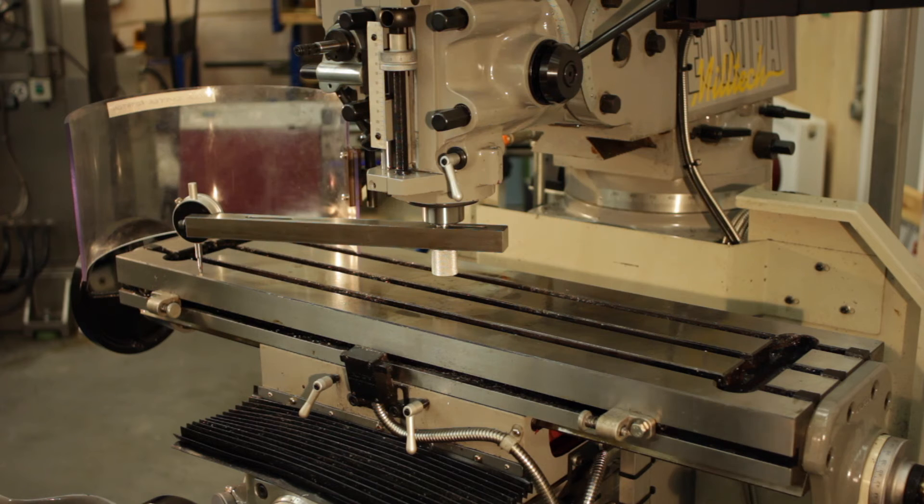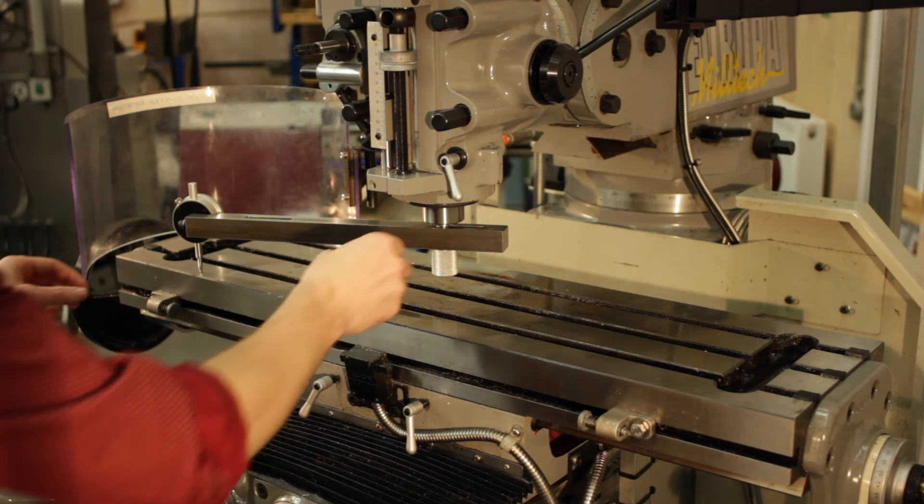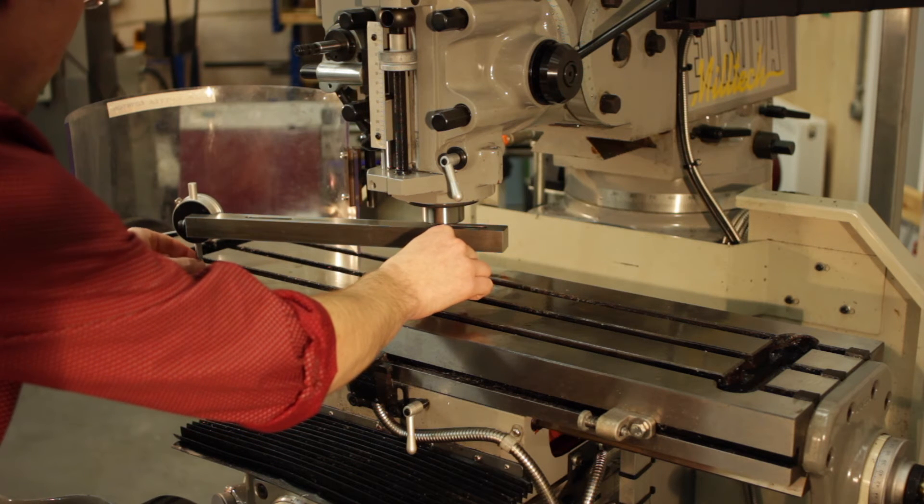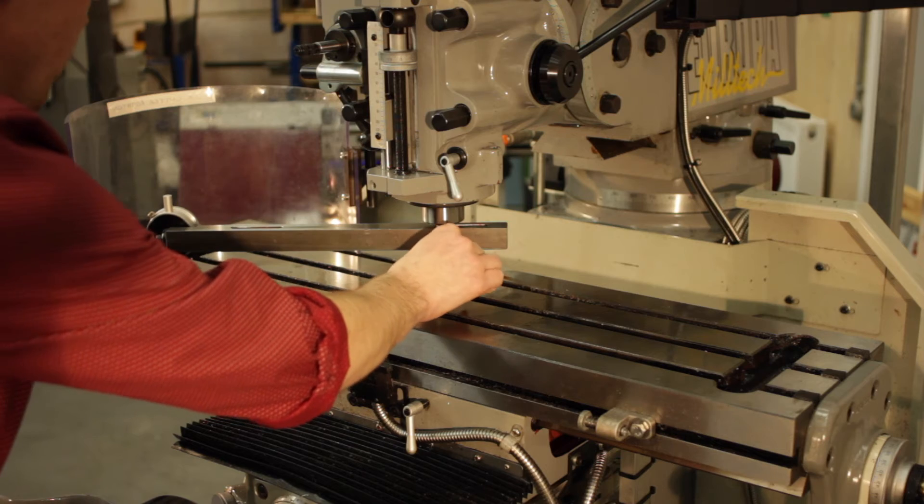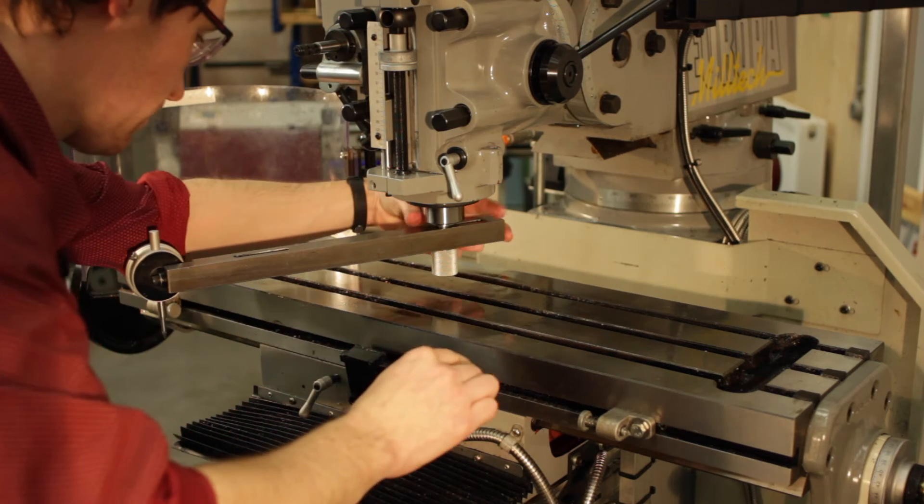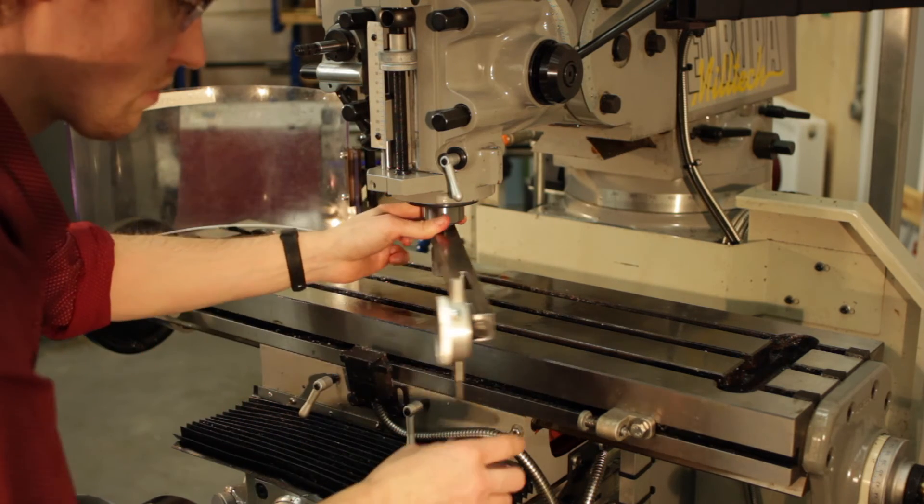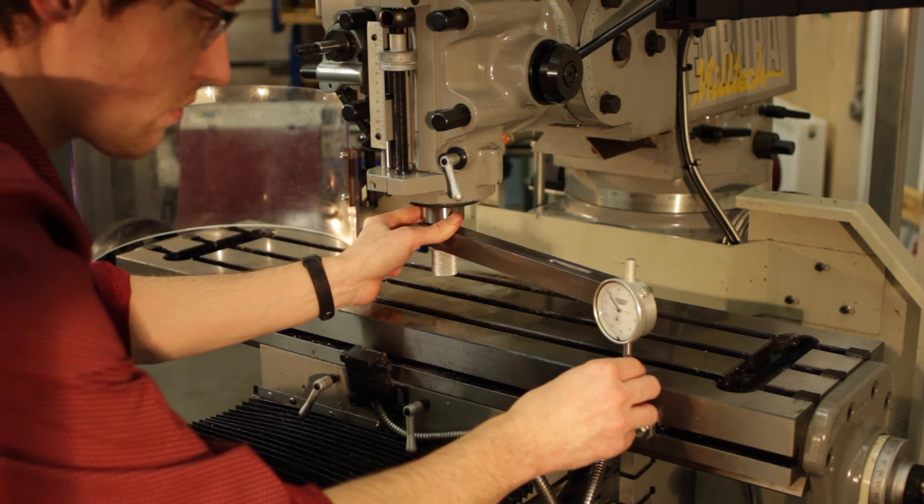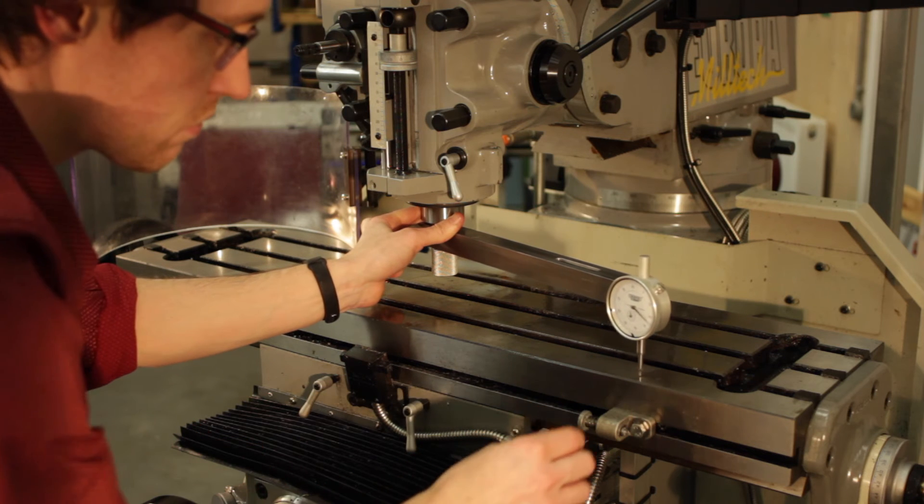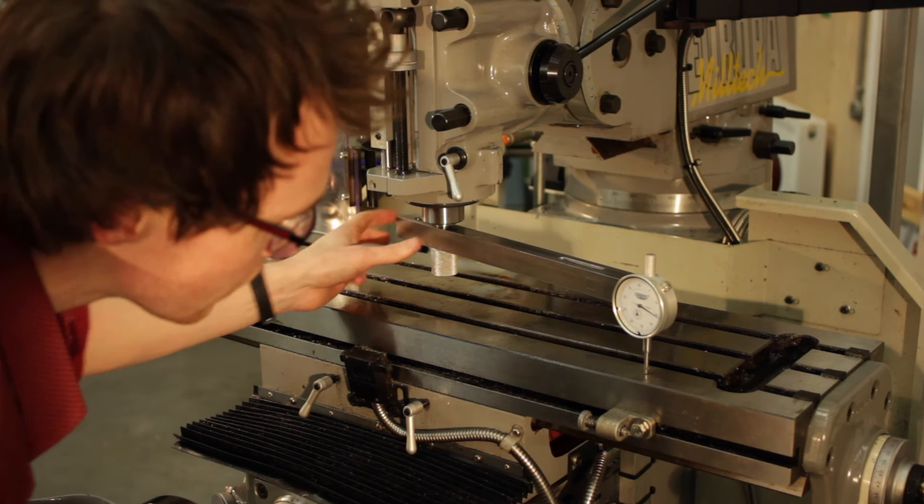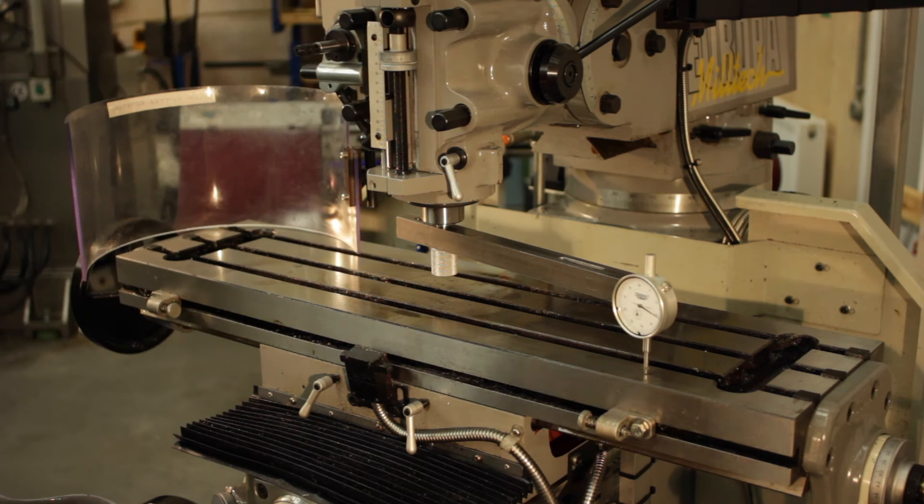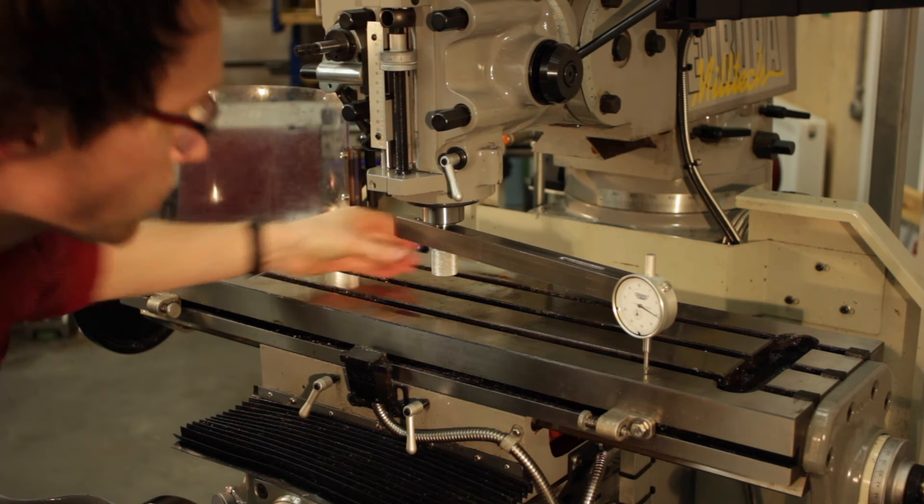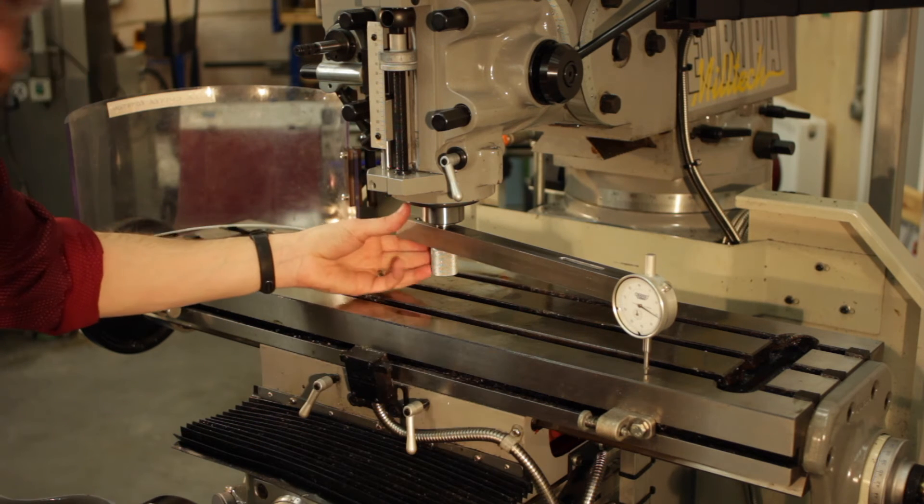So when I move it around, if this is even I should get a reading of 2.2 on the other side as well. And that's pretty good actually, especially given the extra length of this arm. So I'm going to check it one more time and then we'll lock it up using the four screws.